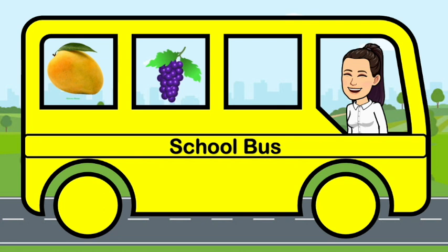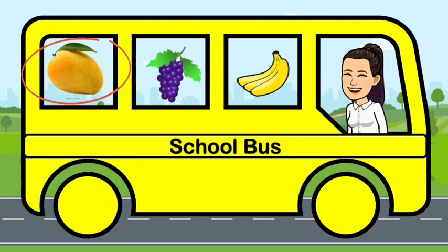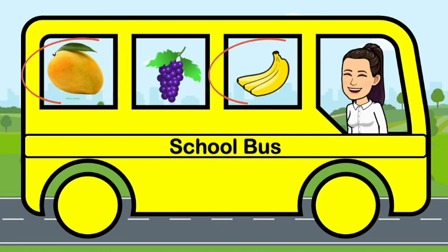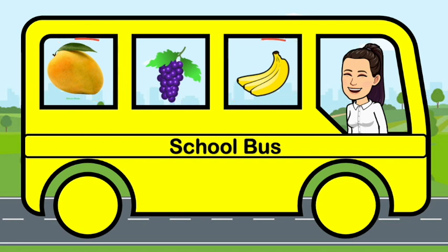Mango, grapes, banana. Which one is yellow? Very good! A mango is yellow. Can you still see other yellow in the picture? You can point it out on your screen. Very good! Another one is banana. Mango and banana are both yellow.